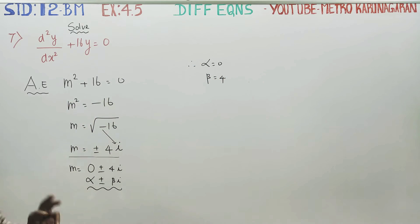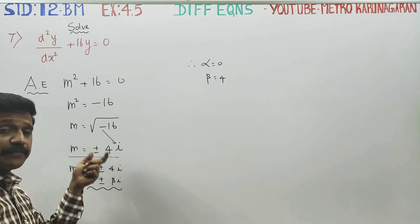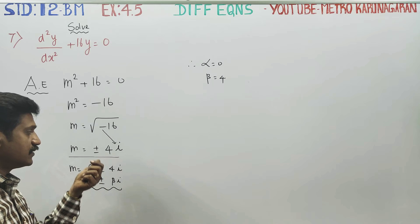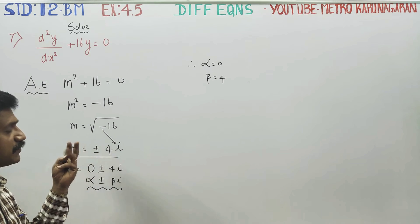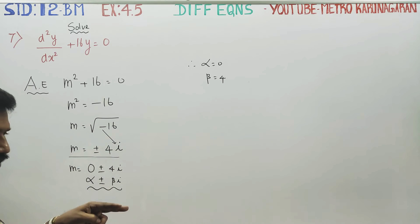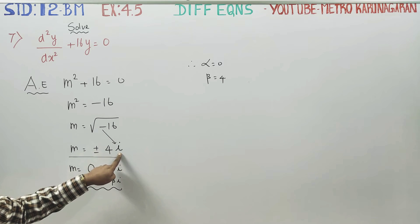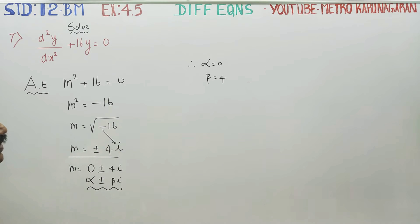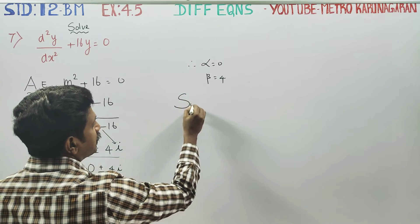For a quadratic equation there are three varieties of answers: real numbers that are unequal, real numbers that are equal, and imaginary numbers. In this problem we have imaginary numbers with values alpha and beta, where alpha = 0 and beta = 4.